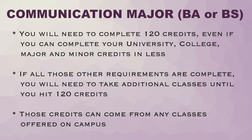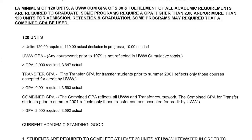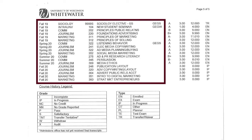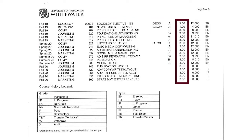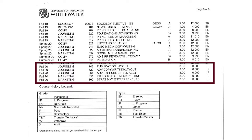The good news: those credits can come from any classes offered on campus. On this student's AAR we see they still have 10 credits to go to reach the 120 credit requirement. The 110 actual credits this student has includes whatever credits they are currently taking. The very back page of your AAR serves as a historical record of every class you've taken — a chronological list of classes, the number of credits they are worth, and the grade you received. This student is currently taking 15 credits, which are accounted for in that total of 110 actual credits.